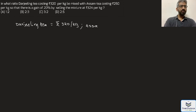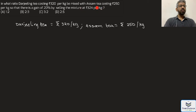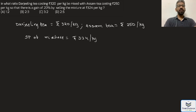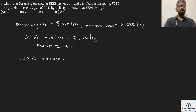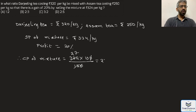Assam tea is the second variety and its price is 250 rupees per kg. Darjeeling tea is combined with Assam tea, and the mixture is sold at 324 rupees per kg, giving a profit of 20 percent. Cost price of the mixture equals selling price multiplied by 100 divided by 120. 12 cancels 27 times into 324, giving a cost price of 270 rupees per kg.